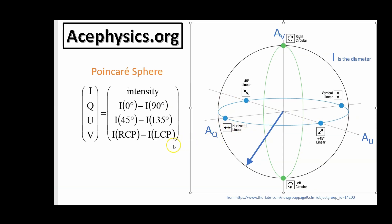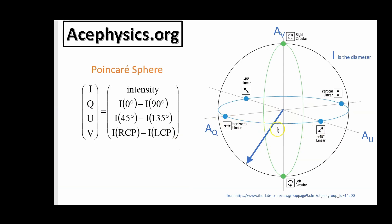Starting at horizontally polarized and moving towards diagonal causes the angle of polarization to rotate until 45 degrees, located at the U axis. The top of the sphere is right circular polarized light. Continuing down the other side, it becomes elliptical again and eventually reaches the opposite of where it started. From the top moving toward negative 45 degrees would be right elliptical, and once you hit 45 degrees it switches from right to left elliptical, eventually becoming left circular and then left elliptical, returning to plus 45 degree linear.